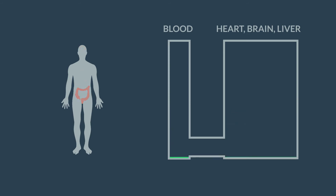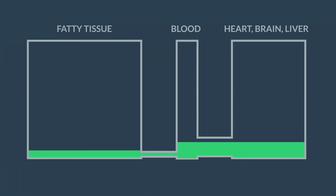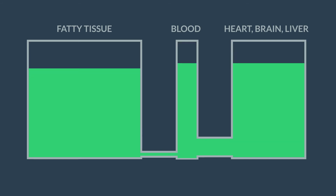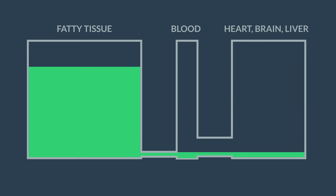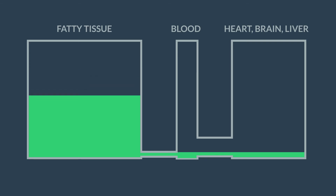With repeated use, however, cannabis will accumulate in the body, primarily in fat tissue. Following cessation, accumulated cannabis will gradually leak out from the fat storage and into the urine.